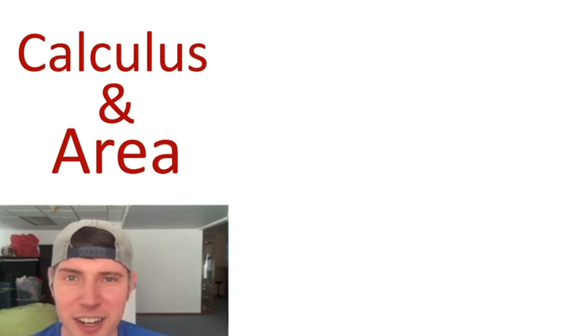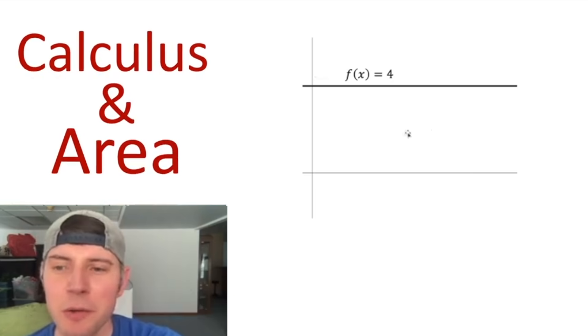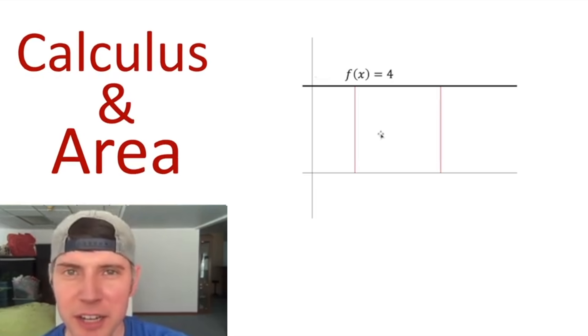A lot of people ask me to do calculus and area, so here it is. We'll start with the horizontal line first. So let's say we want to know the area underneath this line. We pick two endpoints, a lower bound and an upper bound.